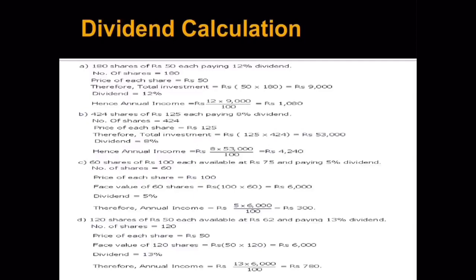In the next case: 60 shares of rupees 100 each available at rupees 75 and paying 5 percent dividend. Here two prices are given — rupees 100 and available at rupees 75. This means the market value is 75 but the face value is 100. I've already stated that dividend is always calculated on the face value, so the market value is of no concern when calculating dividend.